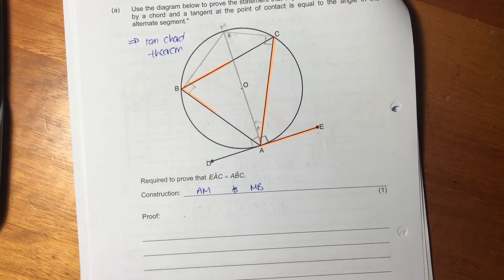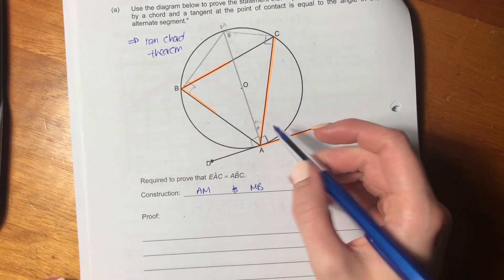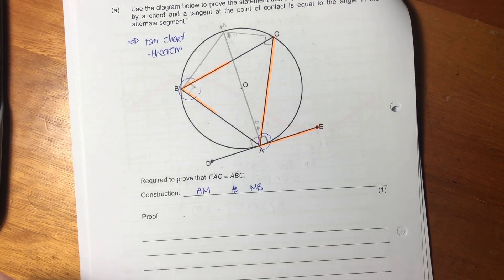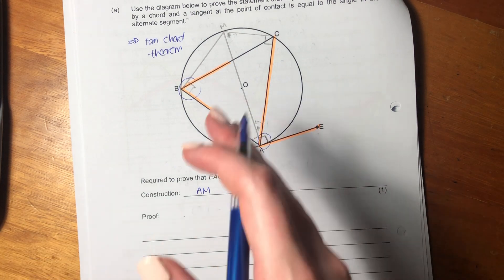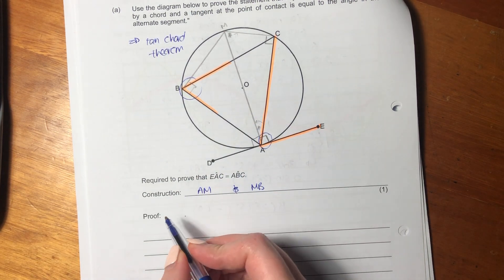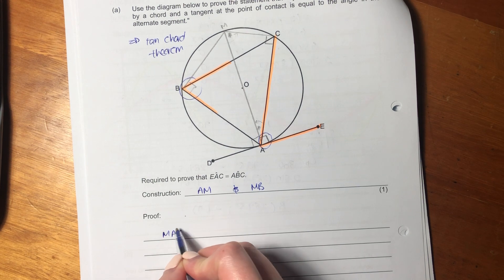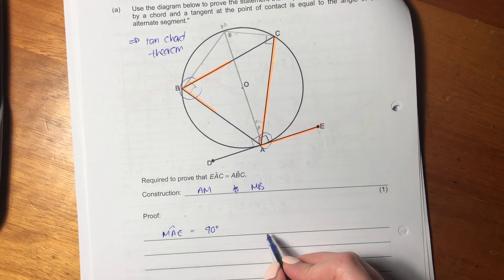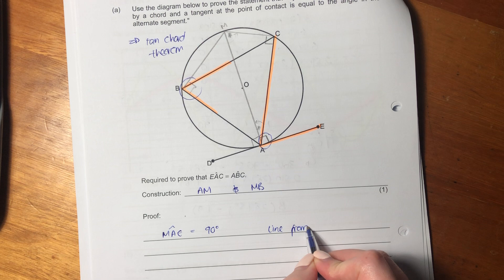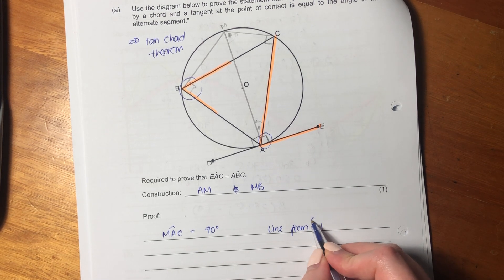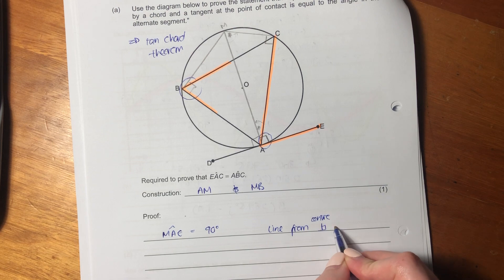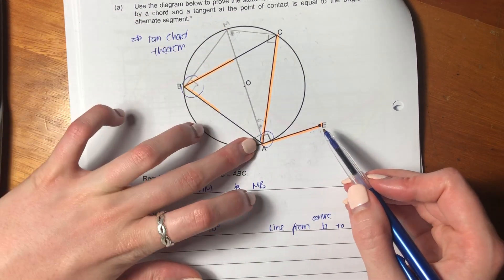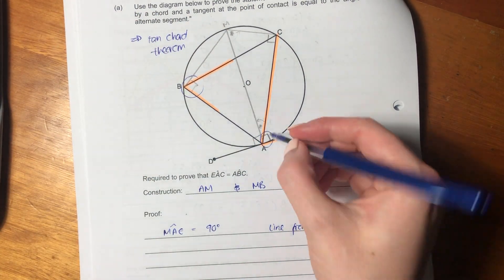So what we want to do is let's first write down, now that I've drawn this in, I now know that this is 90 degrees. So let's just state what we have now that we've drawn in these constructions. I'm going to say MAE equals 90 degrees. And now you could be like, what's the reason? Well, it is line from center perpendicular to tangent. Because this is a tangent, this is the line through center, so that makes it 90 degrees.